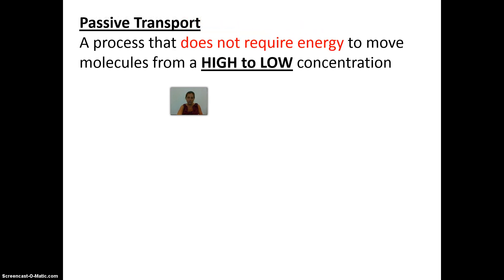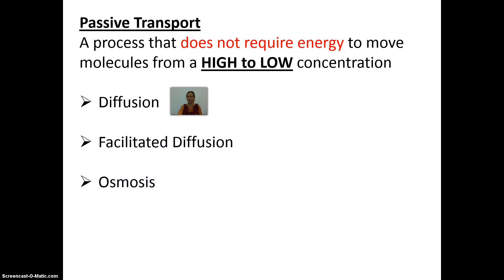Passive transport is a general term for the movement of molecules from a high to a low concentration that does not require energy. Make sure you underline that it goes from high to low concentration, and write in big capital letters that it does not require energy — this is what molecules want to do. The three types of passive transport are simple diffusion, facilitated diffusion, and osmosis.